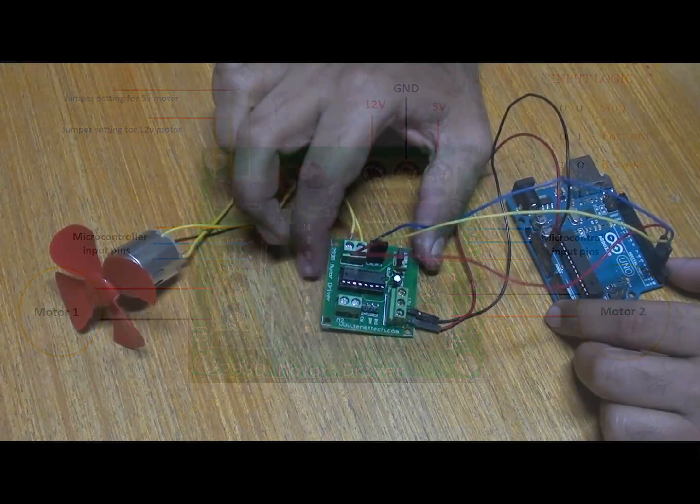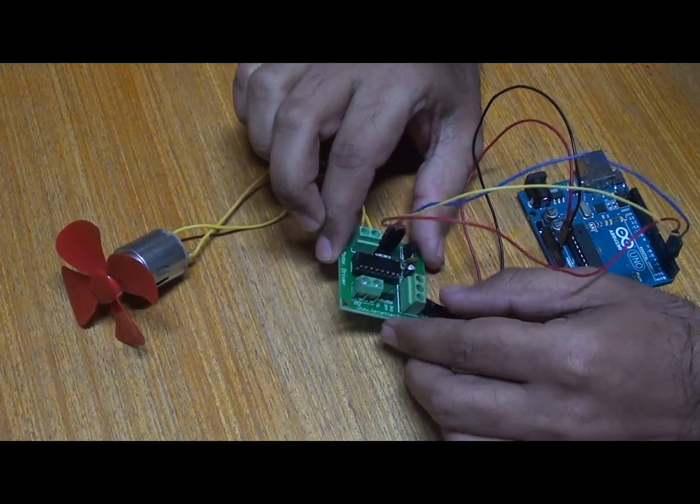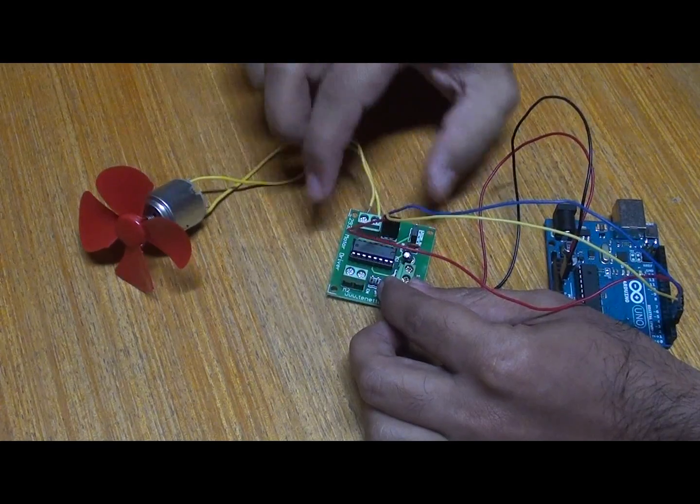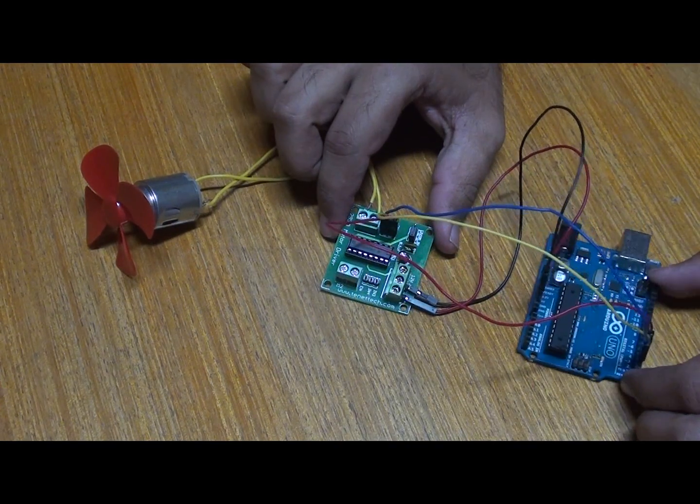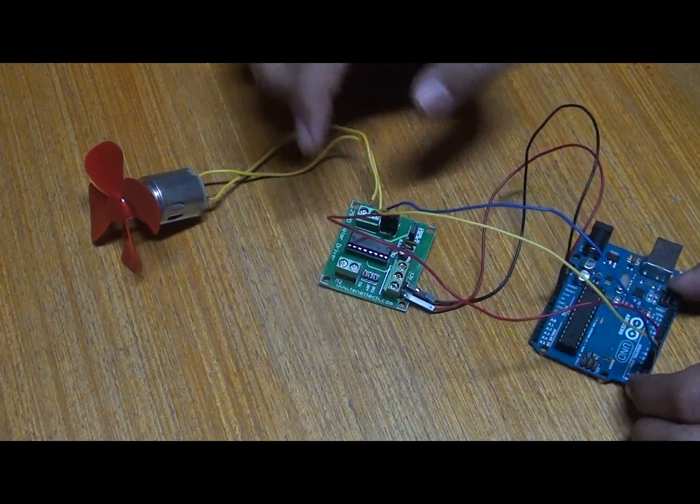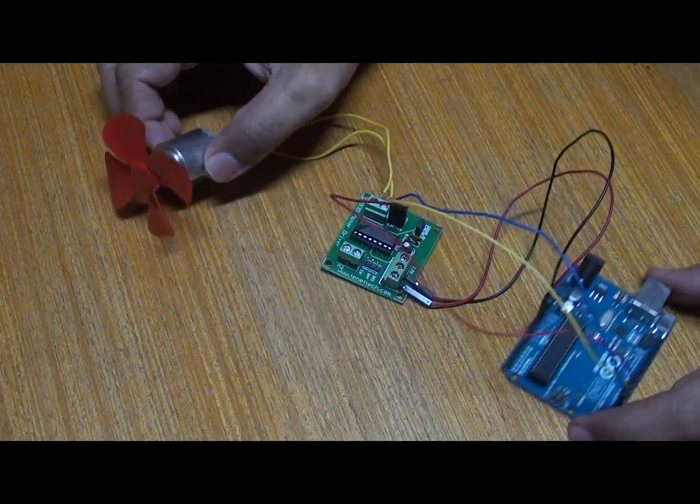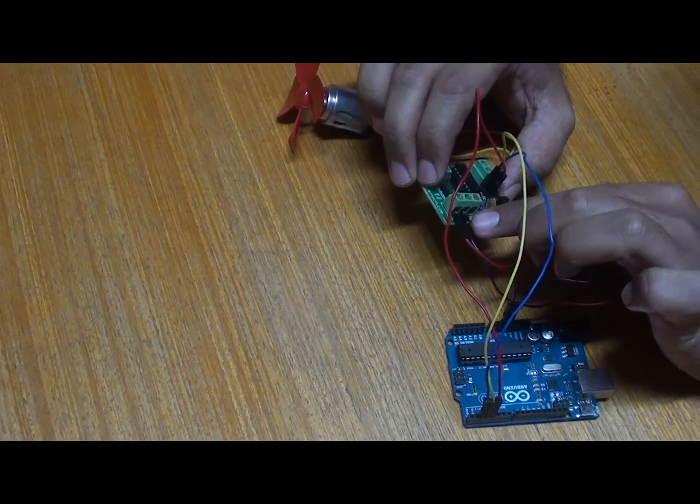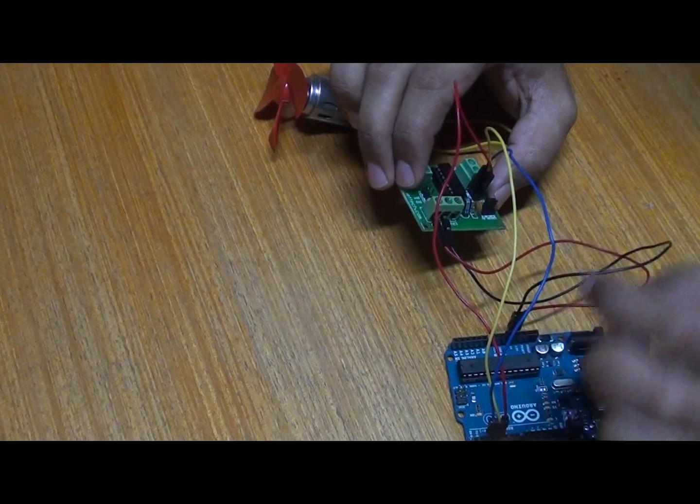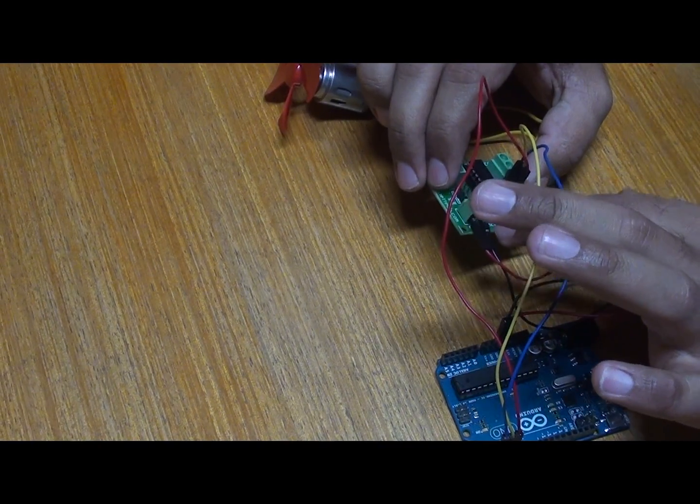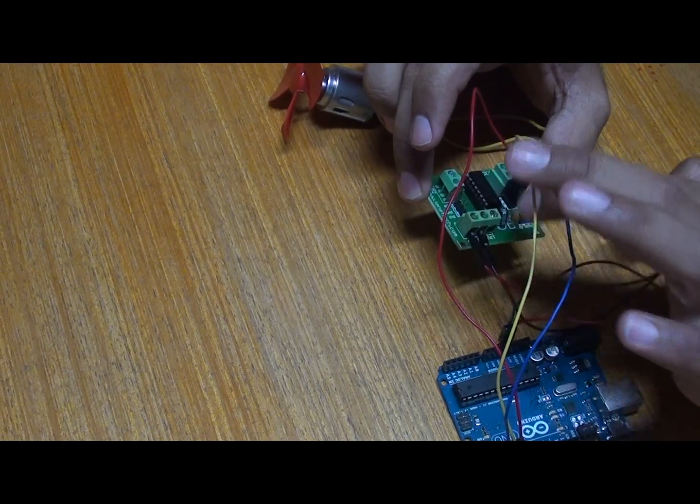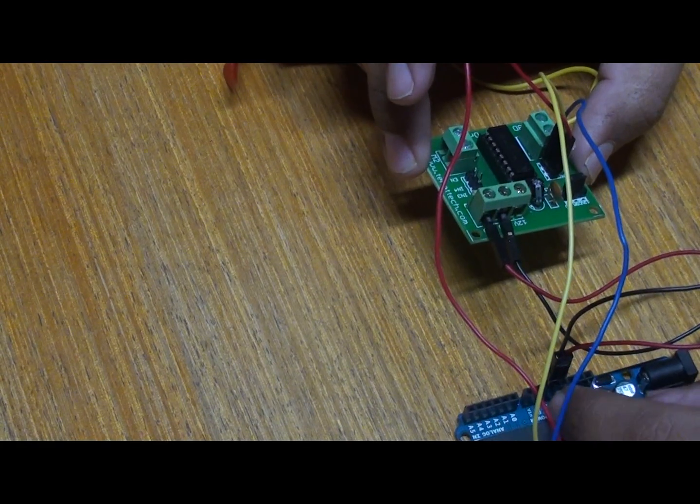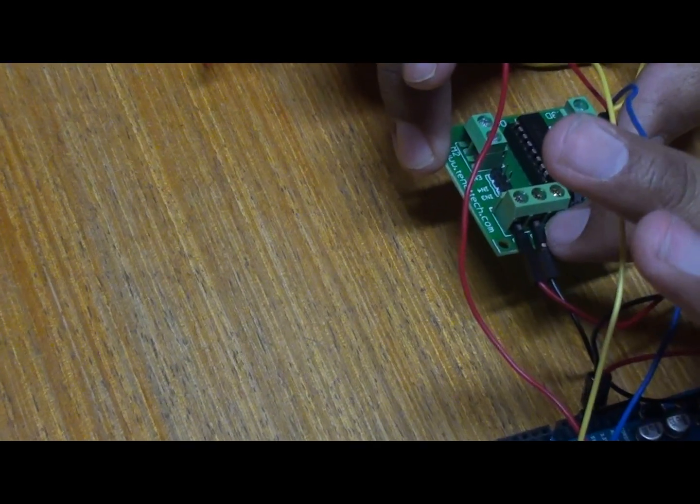Now we will see the demonstration for the motor driver. Here we can see a 5 volt DC motor, the breakout board, and the Arduino, which will be the external board that we're going to use. We are using a 5 volt supply. We give a 5 volt supply plus a ground. This 5 volt supply is given to the motor plus the IC. The 12 volt supply is not used. We just connect the ground and the 5 volt supply to the corresponding ground and 5 volt supply on this board.